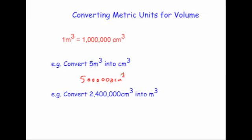Now let's convert two million four hundred thousand centimeters cubed into meters cubed. Here we want to go from centimeters cubed to meters cubed, so we divide by a million. Dividing by a million gives us 2.4 meters cubed.